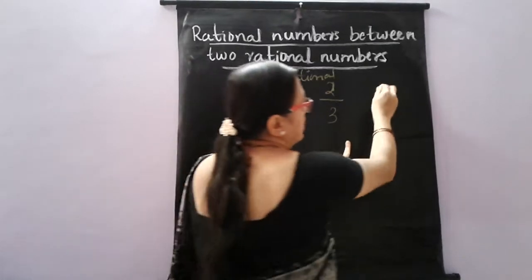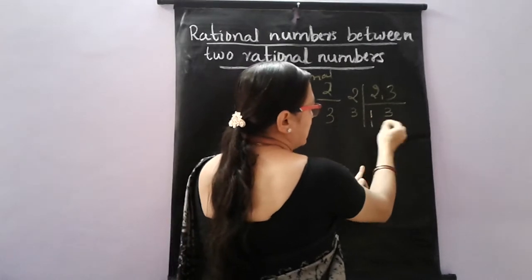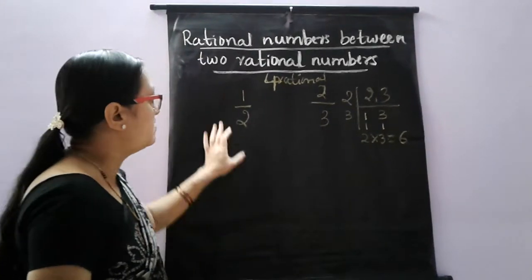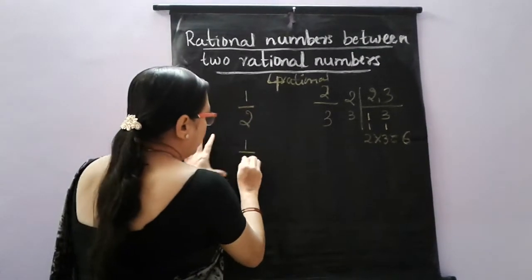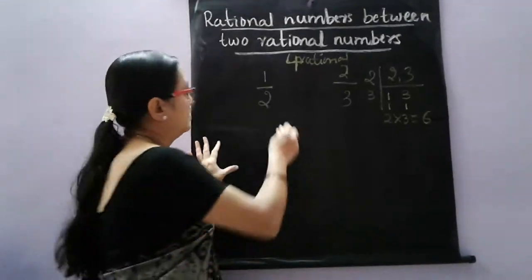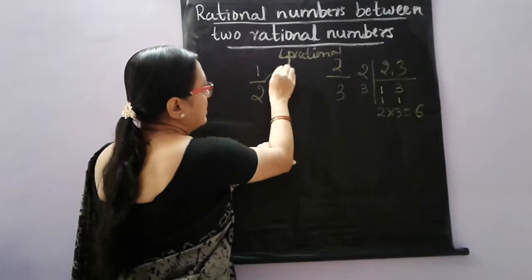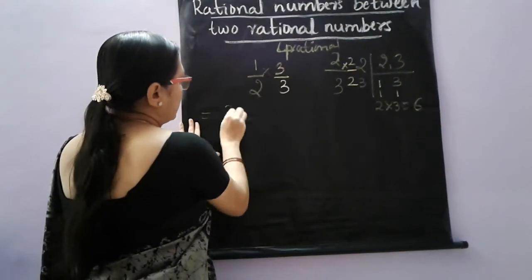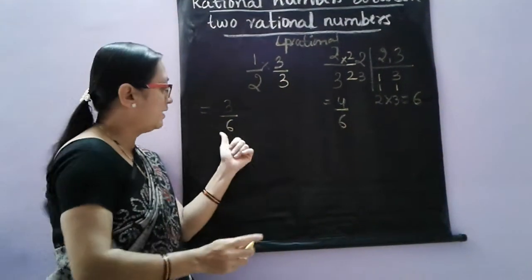You have to take the LCM of 2 and 3. 2 ones are 2, 3 ones are 3, so 2 × 3 = 6 is the LCM. If you get 6 as LCM, first equate the denominators to the LCM. That is, 1 by 2 multiplied by 3 over 3 gives 3 by 6. And 2 by 3 multiplied by 2 over 2 gives 4 by 6. Now you have equal denominators.